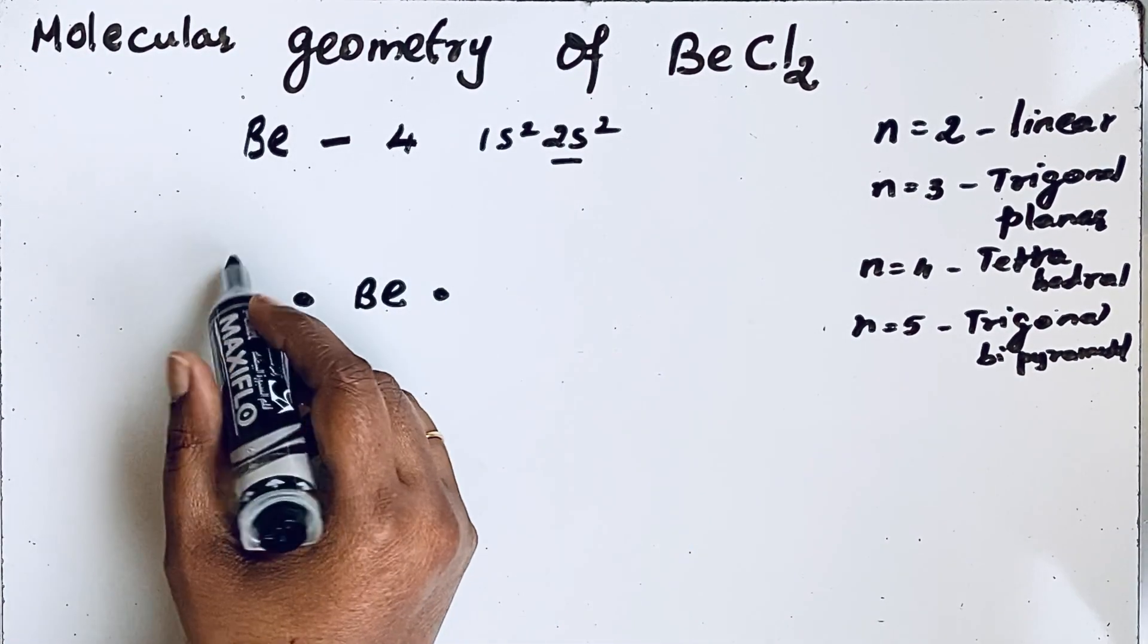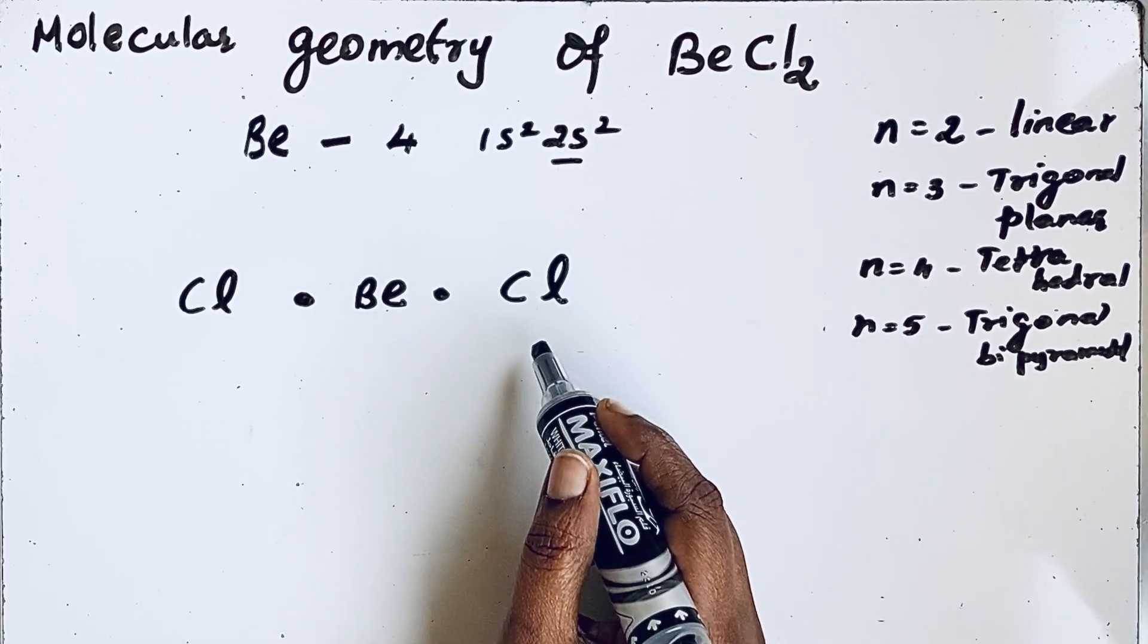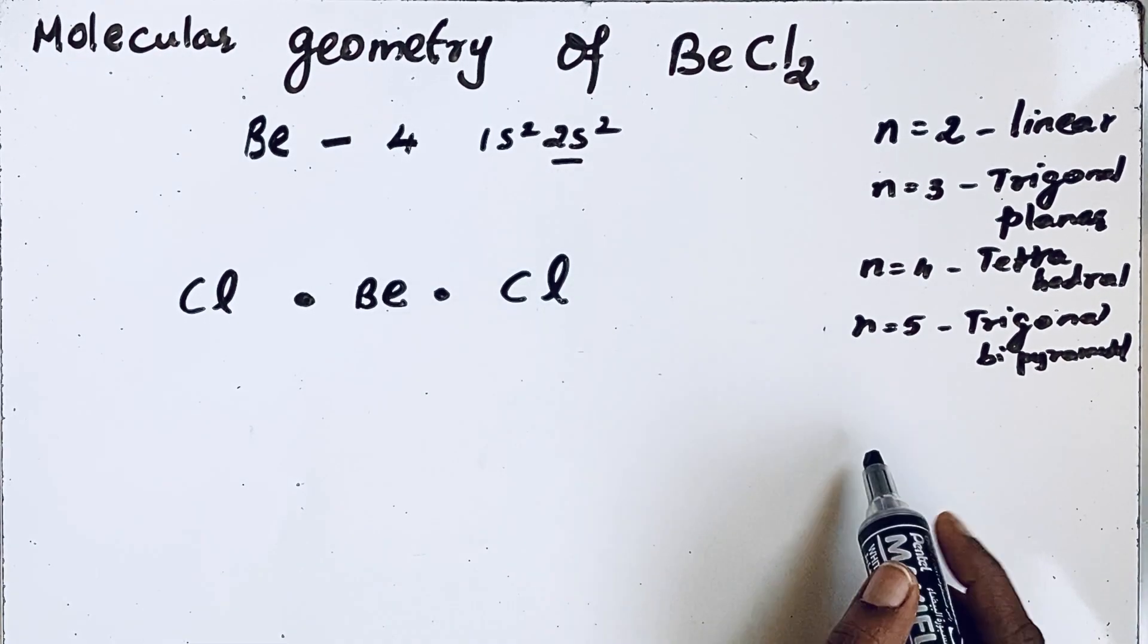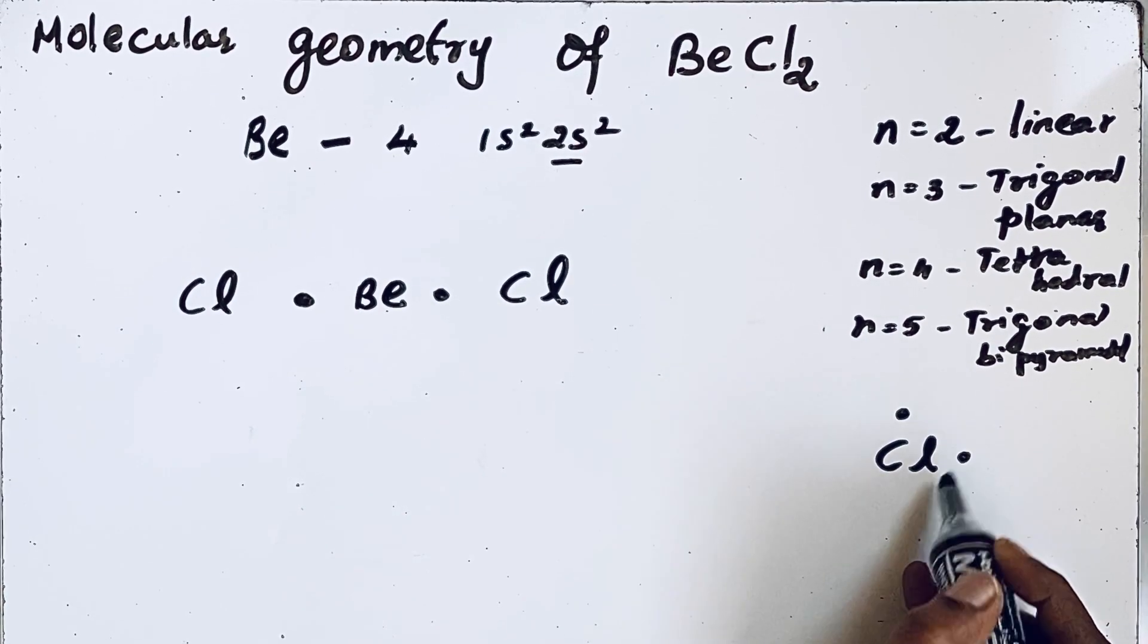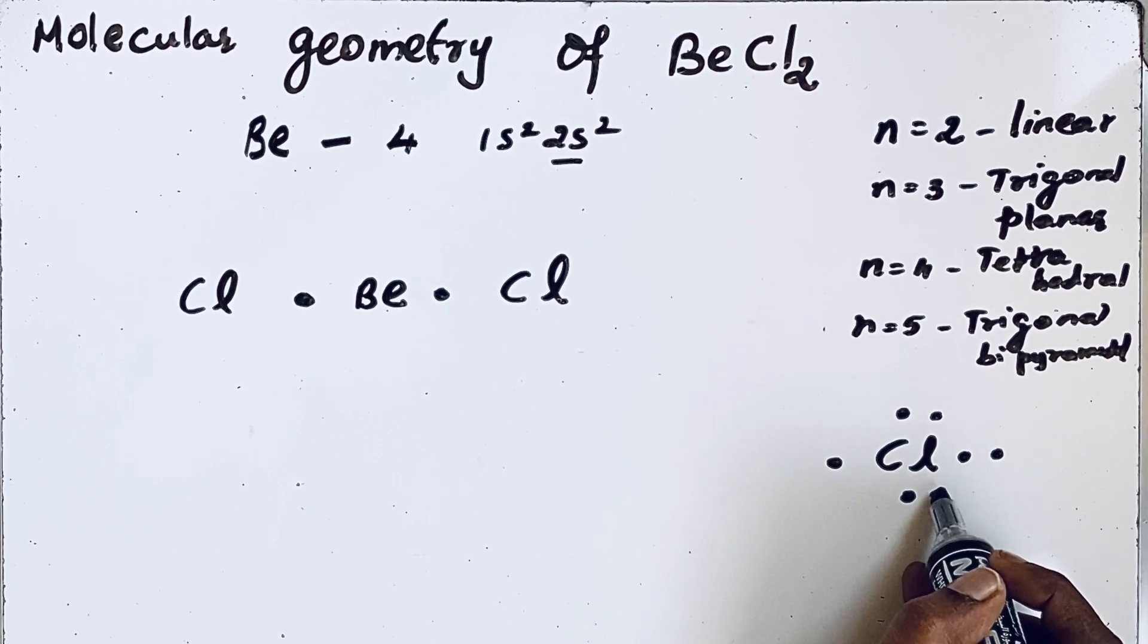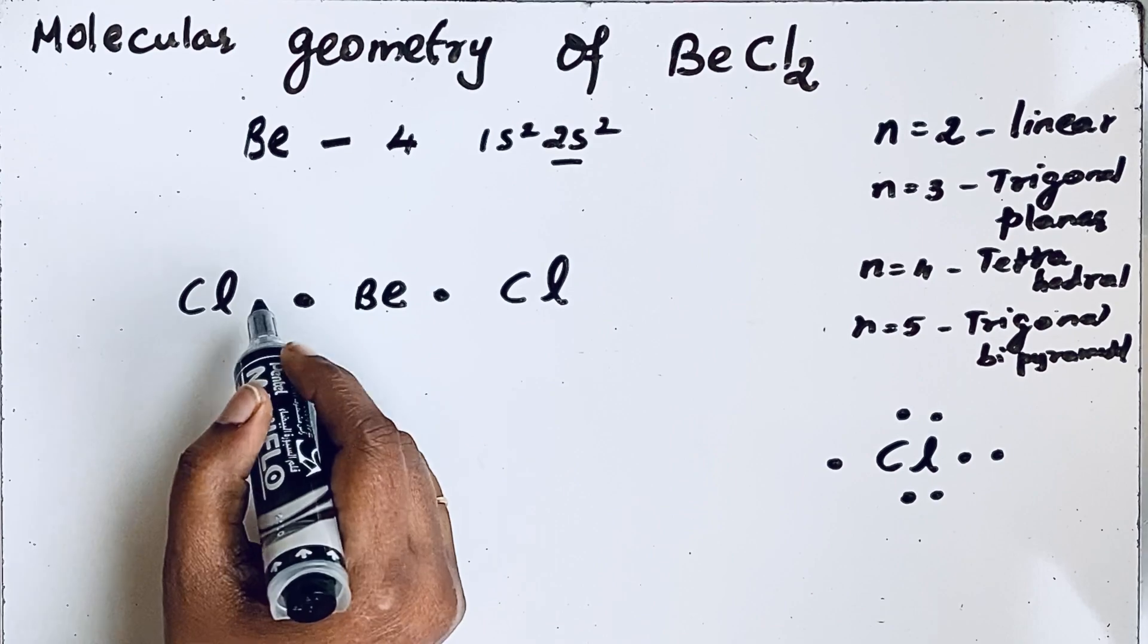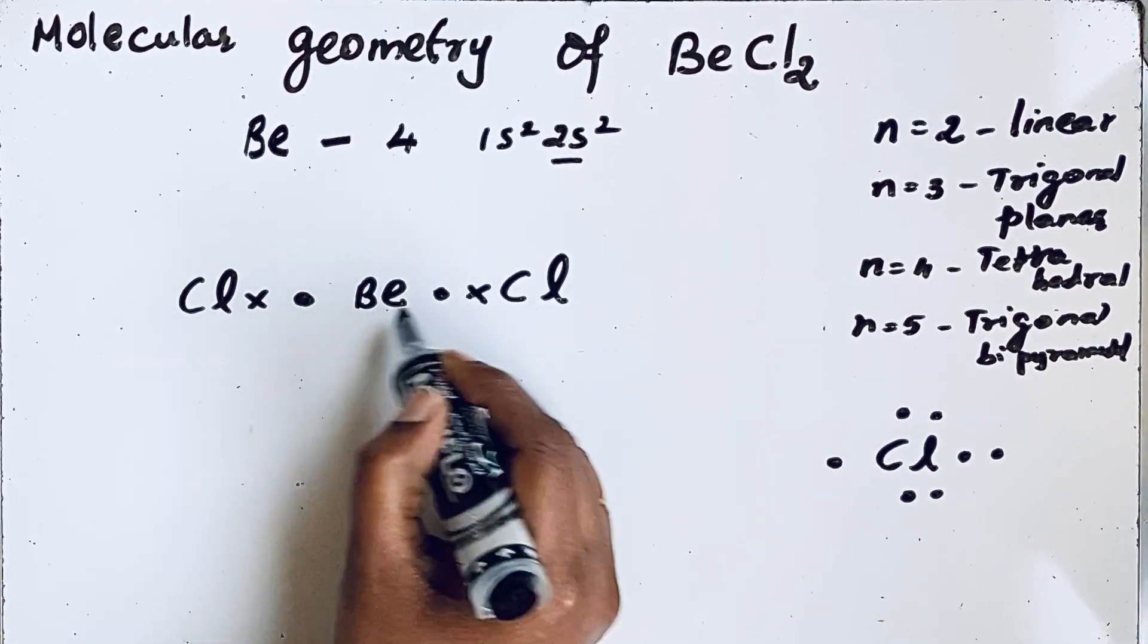Here there are 2 chlorine atoms. Chlorine's atomic number is 17, so there are 7 valence electrons. In the Lewis dot structure: 1, 2, 3, 4, 5, 6, 7 electrons. Chlorine needs 1 electron, which it can share with beryllium, forming 2 bond pairs.